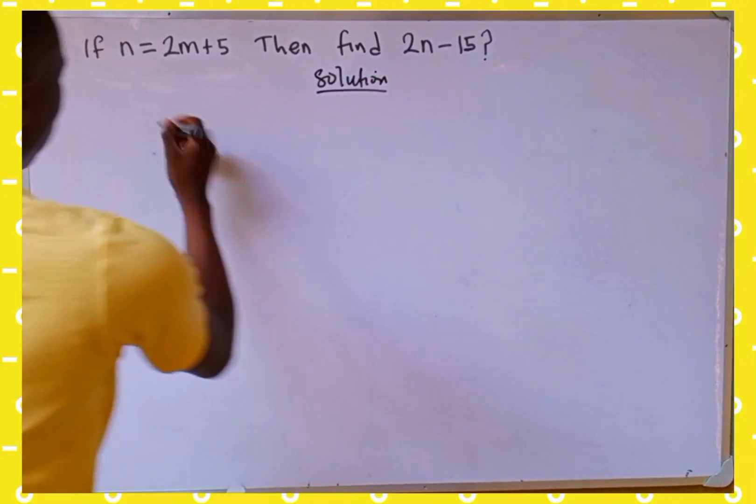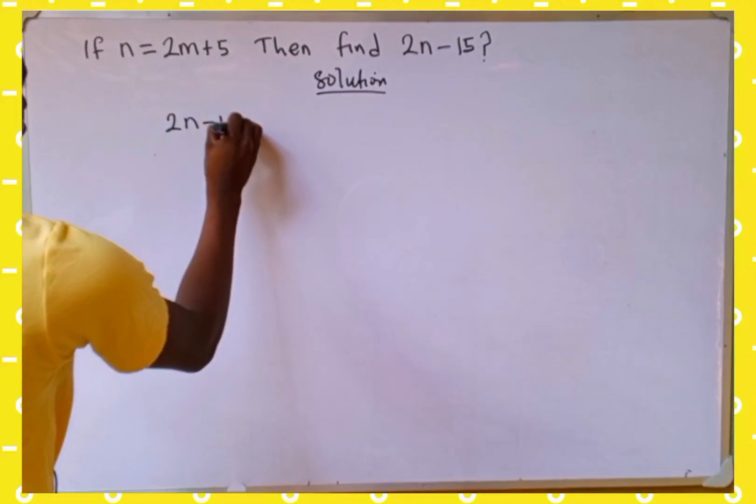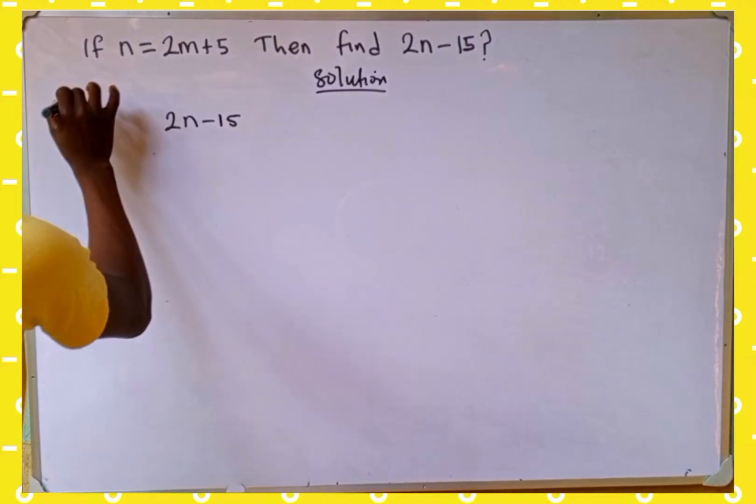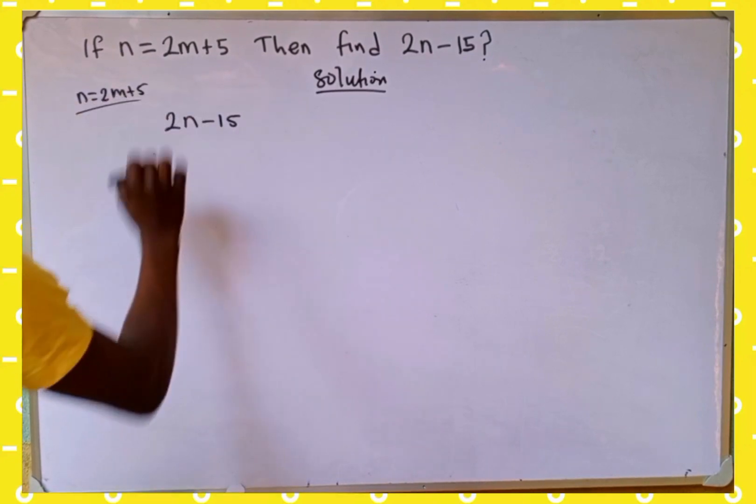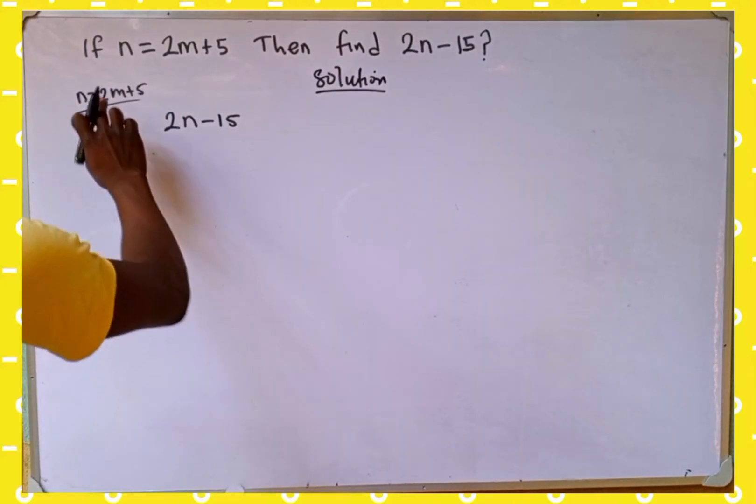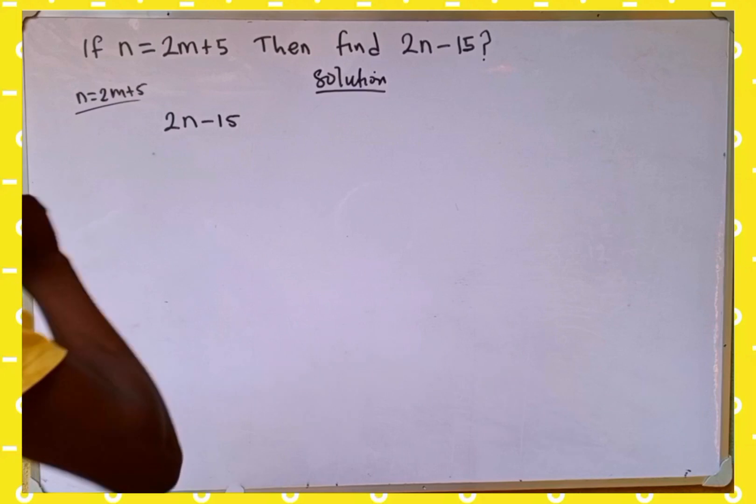So the expression we are looking for is 2n minus 15, and recall from the question, n is equal to 2m plus 5. Now what we are going to do is very simple: substitute the value of n into this expression.